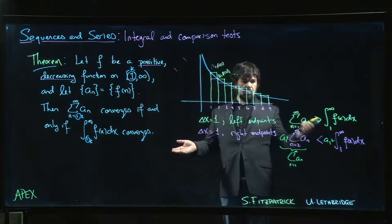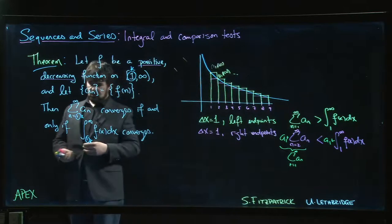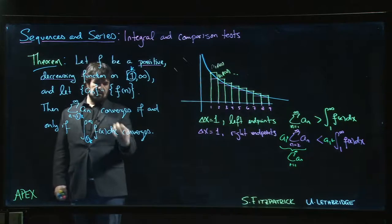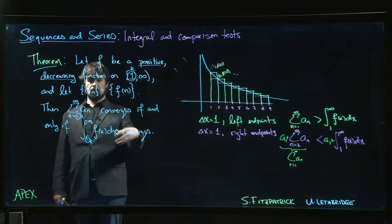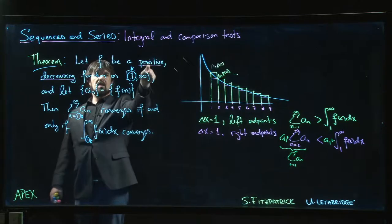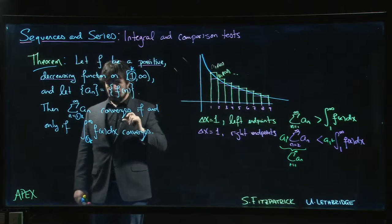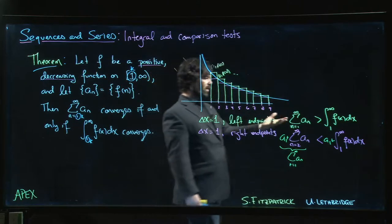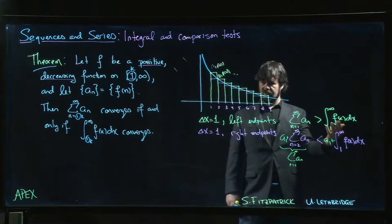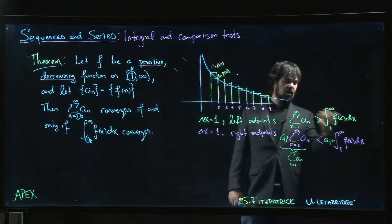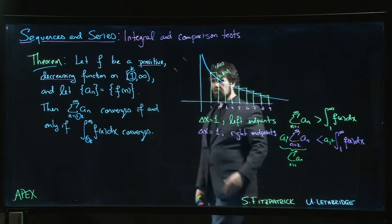But that's the integral test. So the way you apply the integral test is somebody hands you a series and says does this converge? Well, you look at the terms in this series and you say, okay, can I identify those terms with the values of some function? If I can, does the function have these properties, or does it at least eventually have those properties? If it does, then you look at the corresponding improper integral. Hopefully it's one that you know how to evaluate or at least decide on the convergence of. And if you can decide whether or not the improper integral converges or diverges, well then you can apply the theorem and you know whether or not your series converges or diverges.